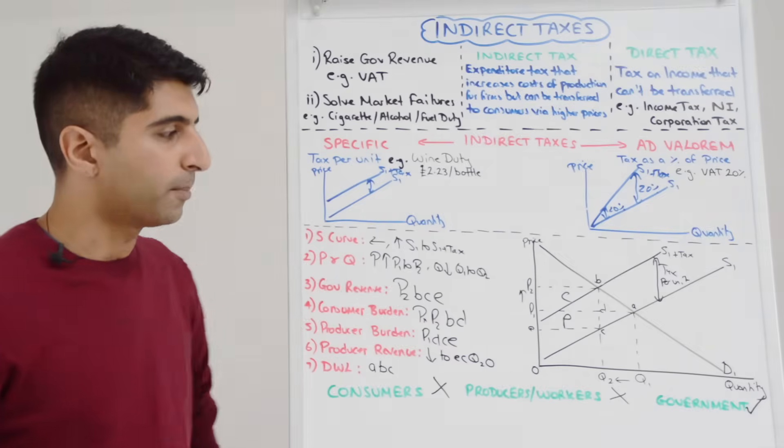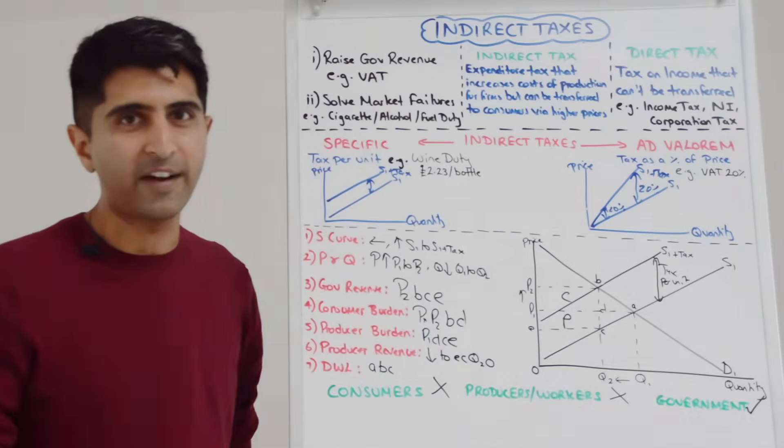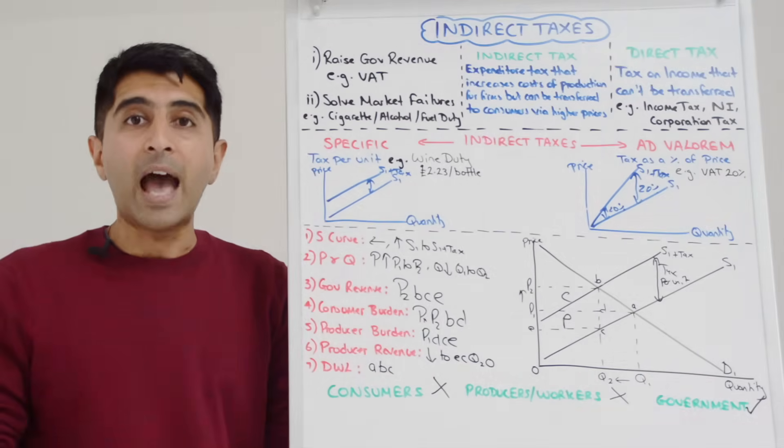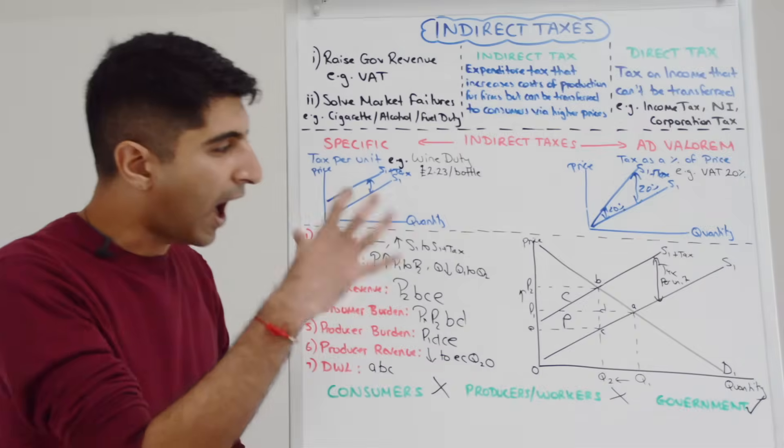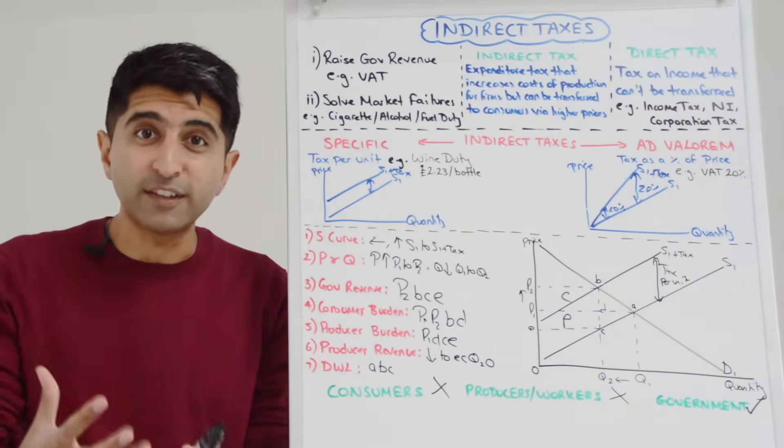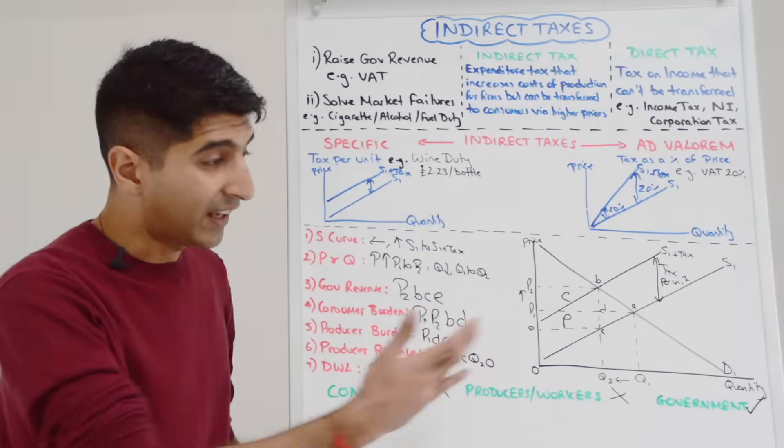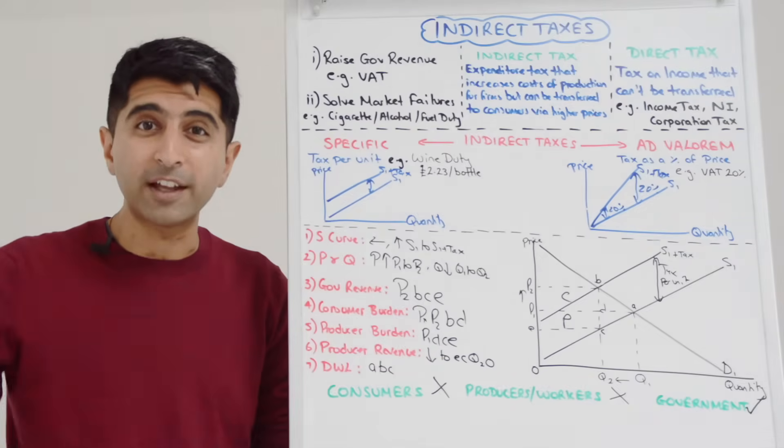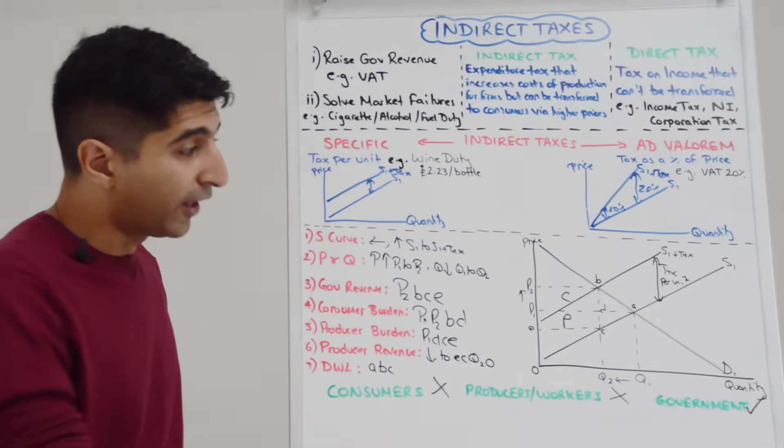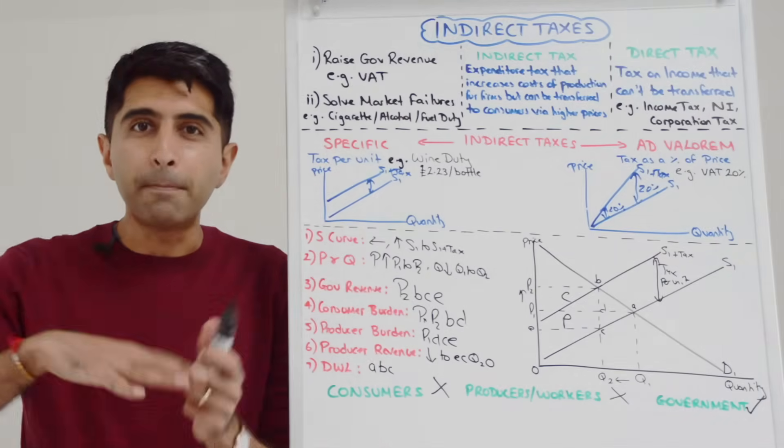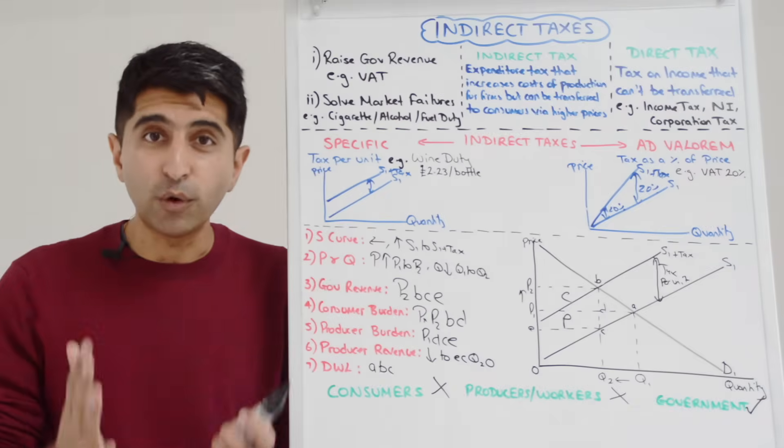But they are not going to like the fact that indirect taxes have a lot of unintended consequences. The harm on consumers, the regressive nature of the indirect tax, the harm to producers, the fact that producers might shut down, they might leave the country. They're not going to like that at all. They're not going to like the fact that there might be black markets created by indirect taxes, for sure that's going to be a terrible thing.